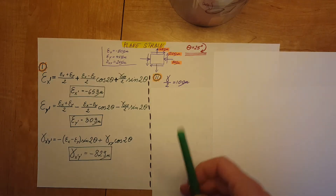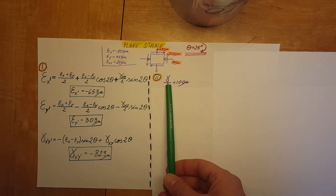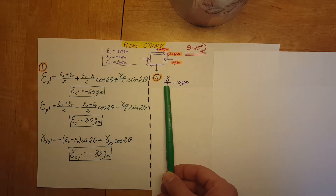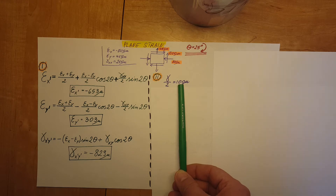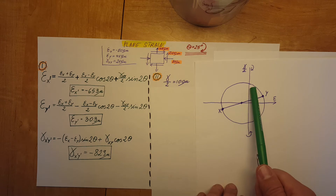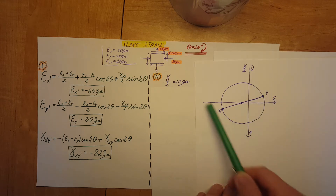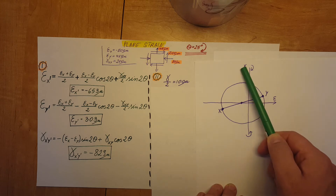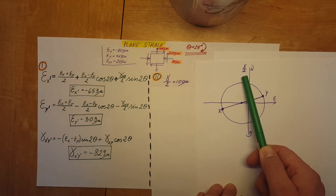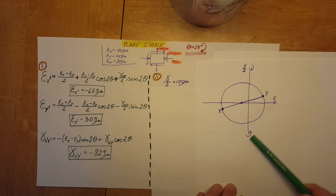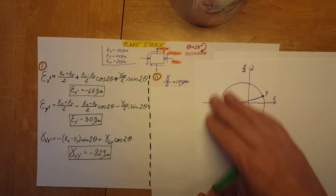The very first thing we should do is divide the shearing strain by two, giving us 100 microns. When working with Mohr's circle, the axes are: normal strain on the horizontal axis, and shearing strain divided by two on the vertical axis. Rotating up or down follows the rules of the Mohr's circle setup.